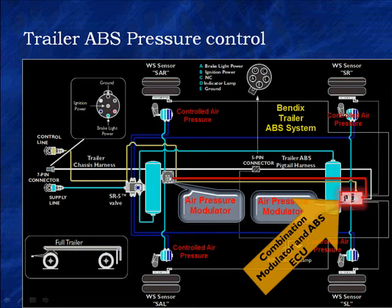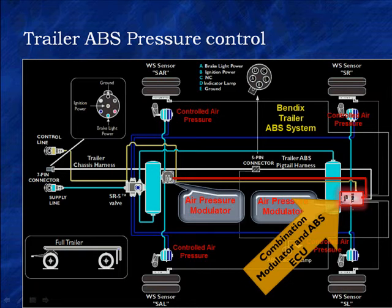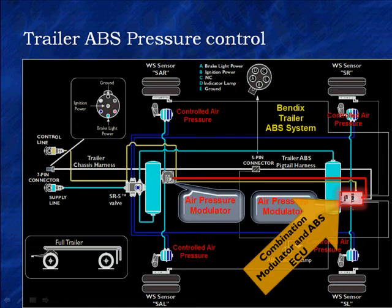Here's the trailer version of ABS. Notice the arrow is pointing to a combination modulator and ABS control ECU — it's all integrated into one. The red line is the controls going to the front brakes. The light blue is the controlled pressure going to the wheels. It comes directly out of the modulator in the rear, and the red information is relayed to the modulator in front to give us controlled air pressure on both the tractor and the trailer.